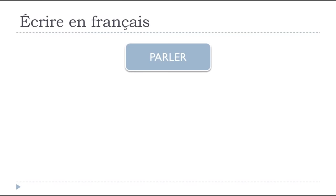I thought it might be useful to start with an example using the verb 'parler.' We will look at its conjugation — remember we'll focus on conjugation in more detail in another video coming later — but this is just to give you a good example. 'Parler' means 'to speak' or 'to talk,' and it's a regular verb belonging to the first group, ending with -ER. Let's see how we conjugate it at the present tense.